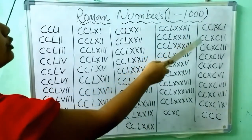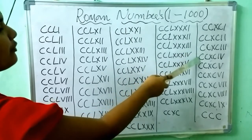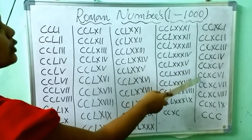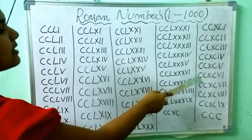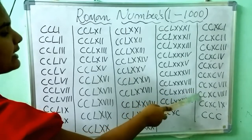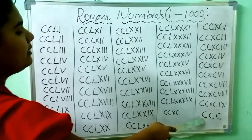291, 292, 293, 294, 295, 296, 297, 298, 299, 300.